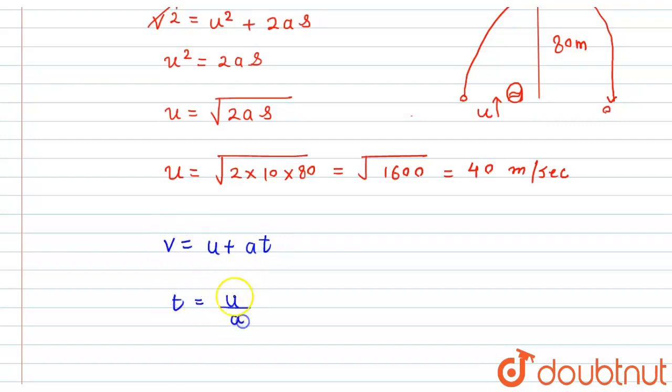From here t will become equal to u divided by a because the final velocity v will be zero. So if we substitute the values, that is 40 divided by 10, this would become equal to 4 seconds.